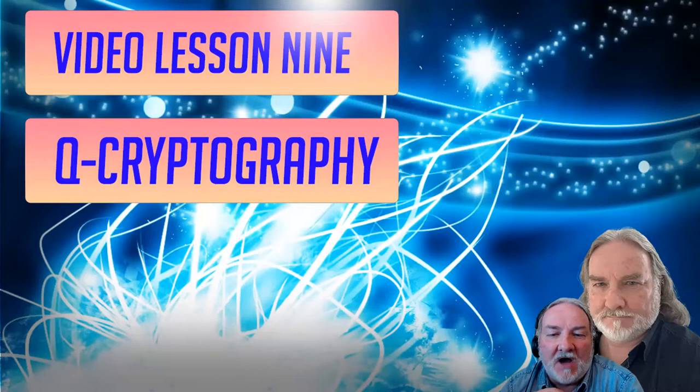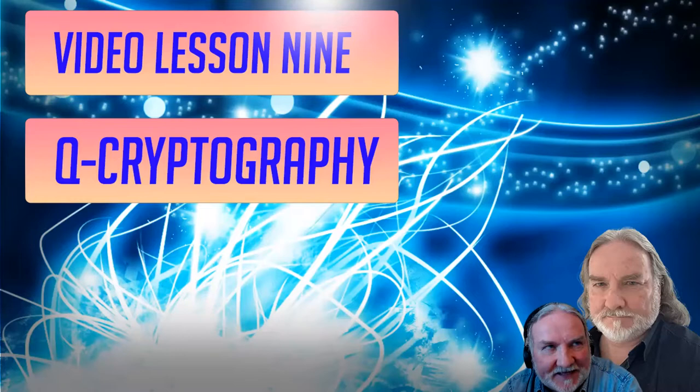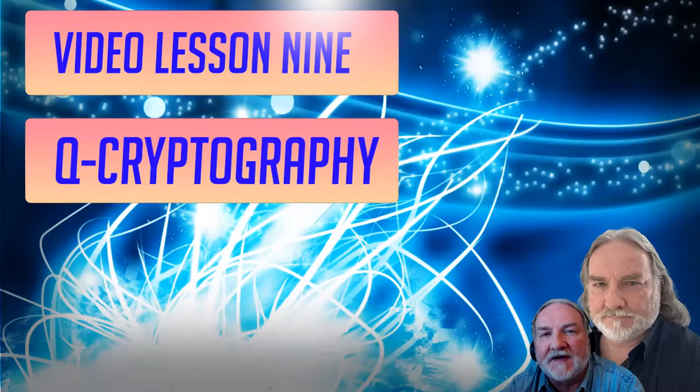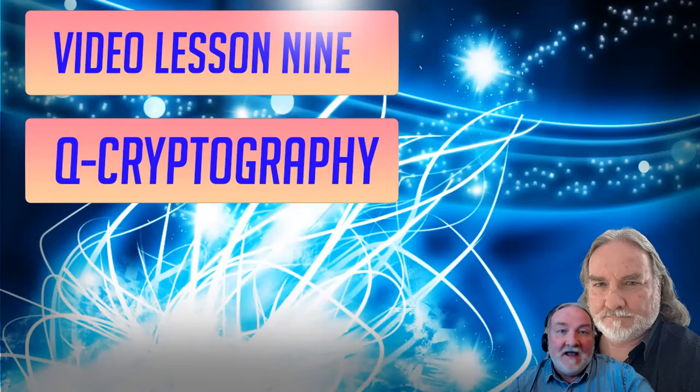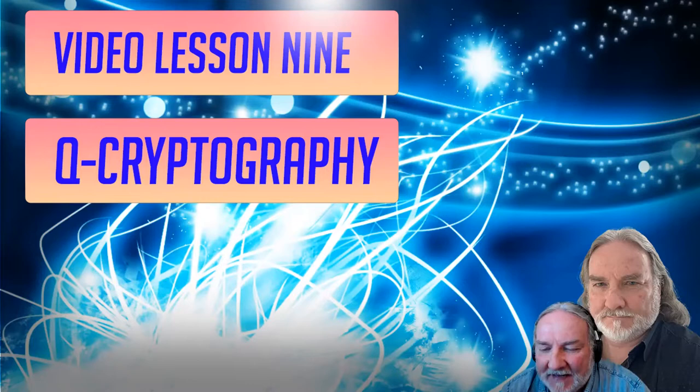And we're up to our penultimate lesson on quantum cryptography, and one of the most stunning changes that are going to happen in our society will come from quantum cryptography. Because for the first time ever, we're going to have an unhackable code, which is called the BB84 protocol, which I'll get to and I'll make sure you fully understand.